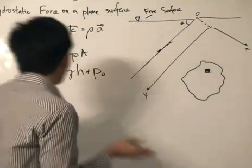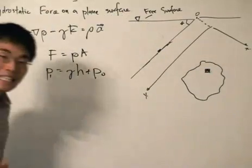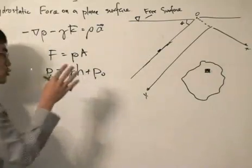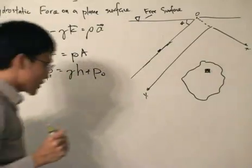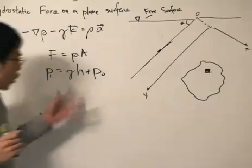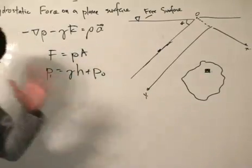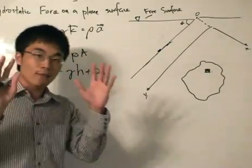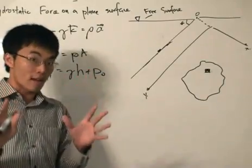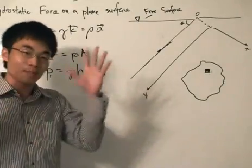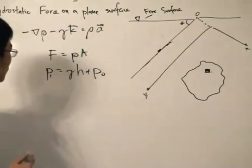This is called a hydrostatic distribution. I remind you again — it's because the pressure varies linearly with height. Bear in mind that the fluids we're studying are fluids at rest. This is a specific type of fluid: hydrostatic distribution.